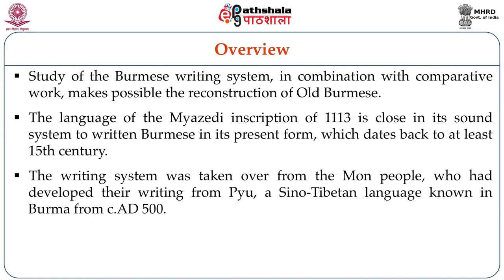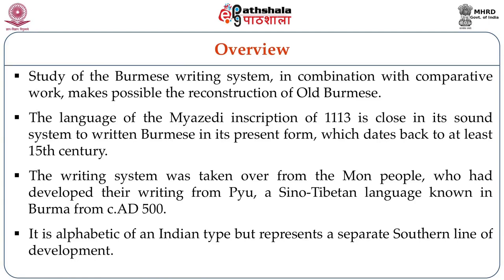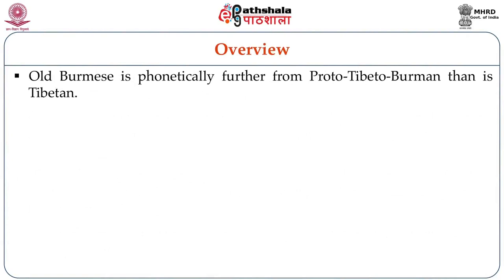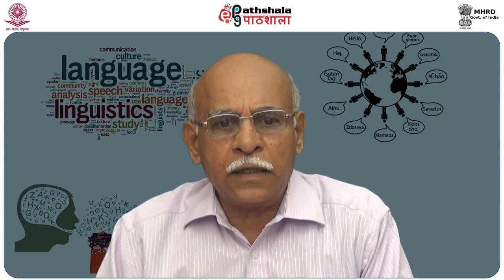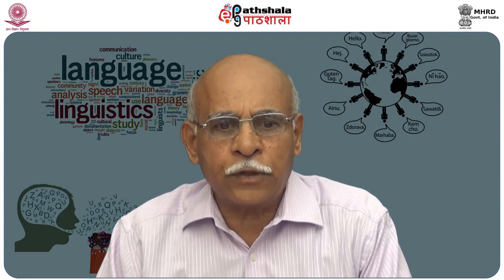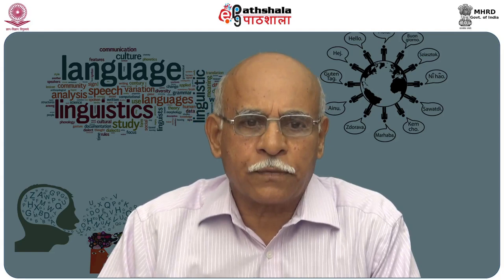The writing system was taken over from the Mon people, who had developed their writing from Pyu, a Sino-Tibetan language known in Burma from around 500 AD. It is alphabetic of an Indian type but represents a separate southern line of development. Old Burmese is phonetically further from Proto-Tibeto-Burman than East Tibetan. Initial clusters are mostly gone but are felt in the development of initial consonants. Some clusters with semivowel and liquid sounds were retained. The tonal system of Burmese, unlike that of Tibetan, developed to compensate for the loss of final features.